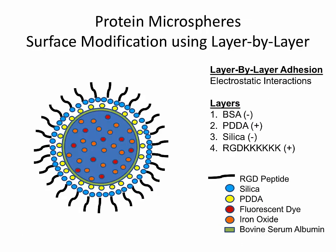The last modification is surface modification using a layer-by-layer adhesion process based purely on electrostatics of the particle. Since our outer protein shell is made of BSA, which is usually more negatively charged, we can put things like an RGD polylysine peptide on it — the lysines are positively charged and adhere to the negatively charged surface. We also added PDDA and silica mostly because during cell studies, the oil-filled protein microspheres were floating to the top of our cell culture. This step was only added so that protein microspheres would get within reach of the cells in cell studies; for in vivo or animal studies, we would just add the RGD layer immediately.